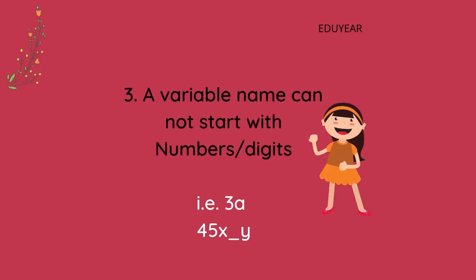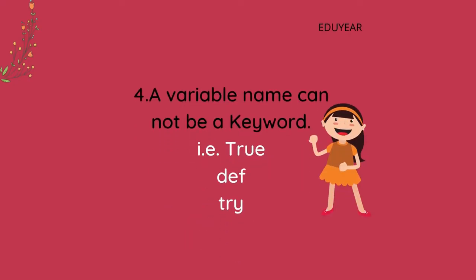A variable name cannot start with a digit. A variable name cannot be a keyword. But what is a keyword? We will study it further. Let's have a quick summary.